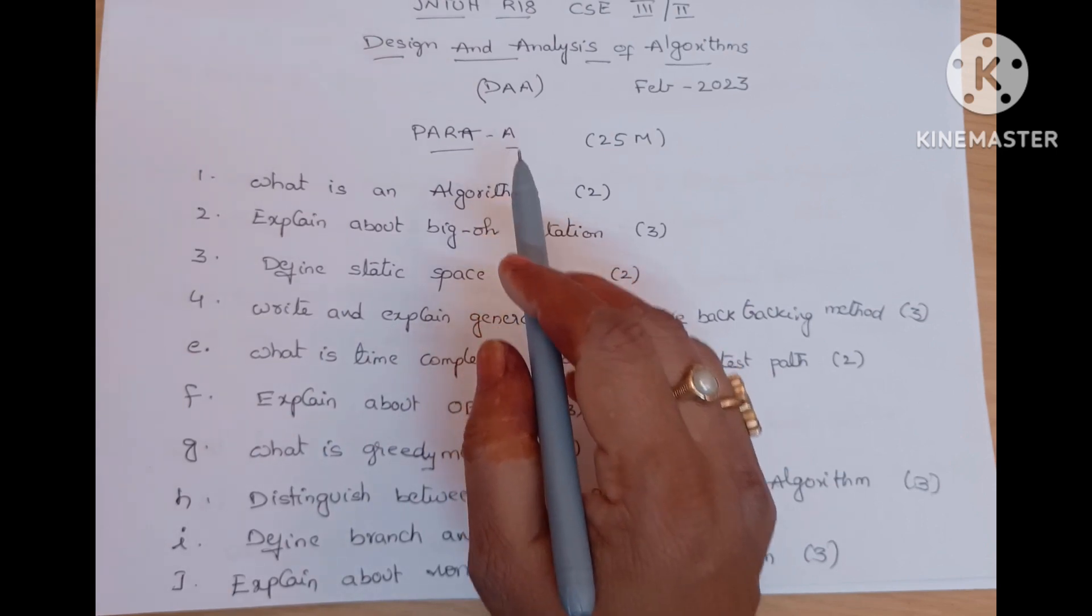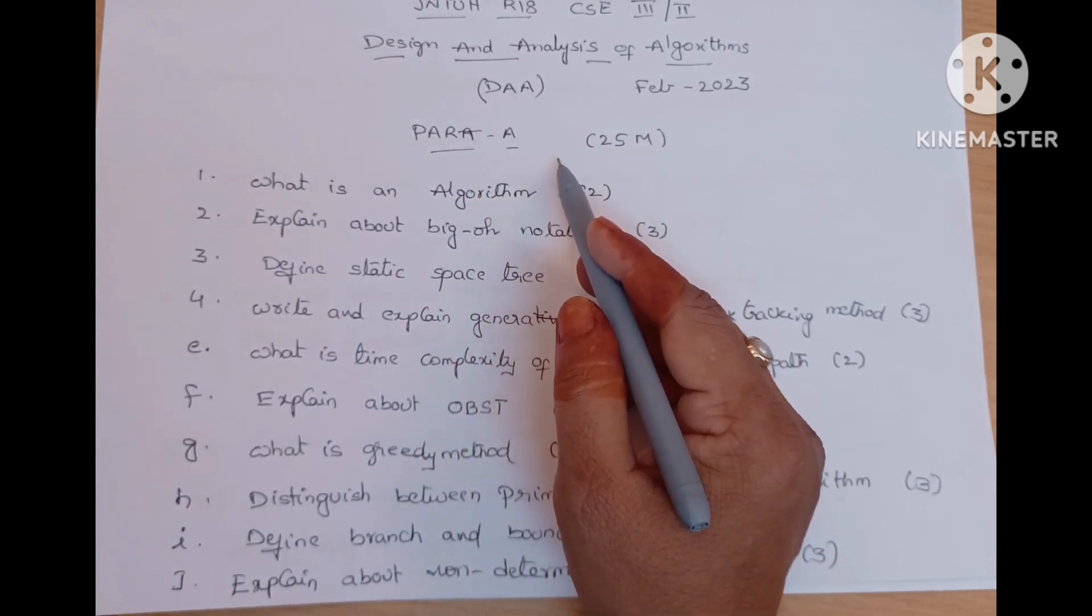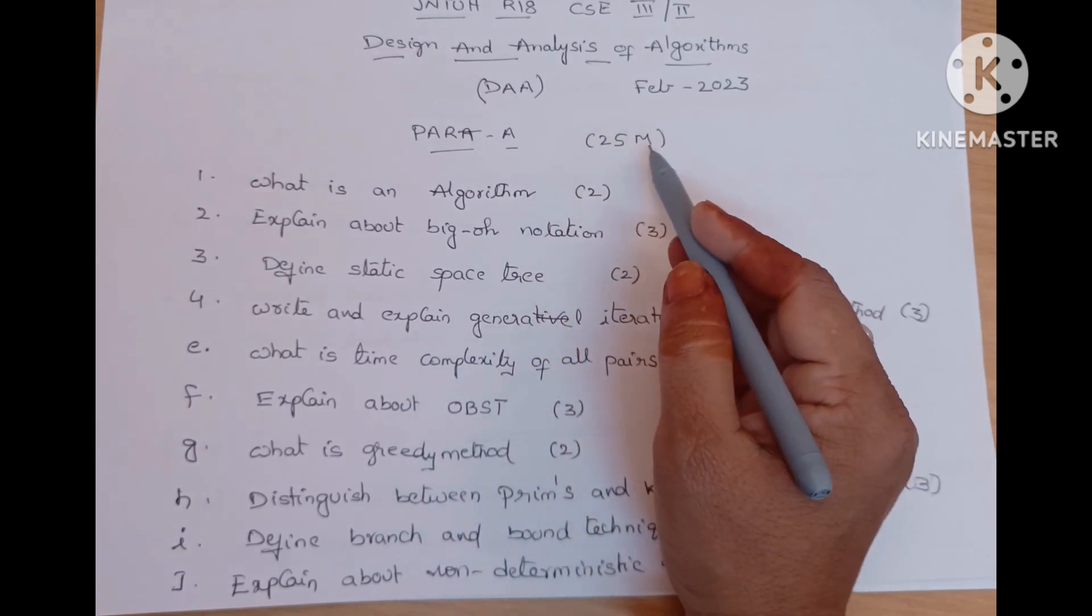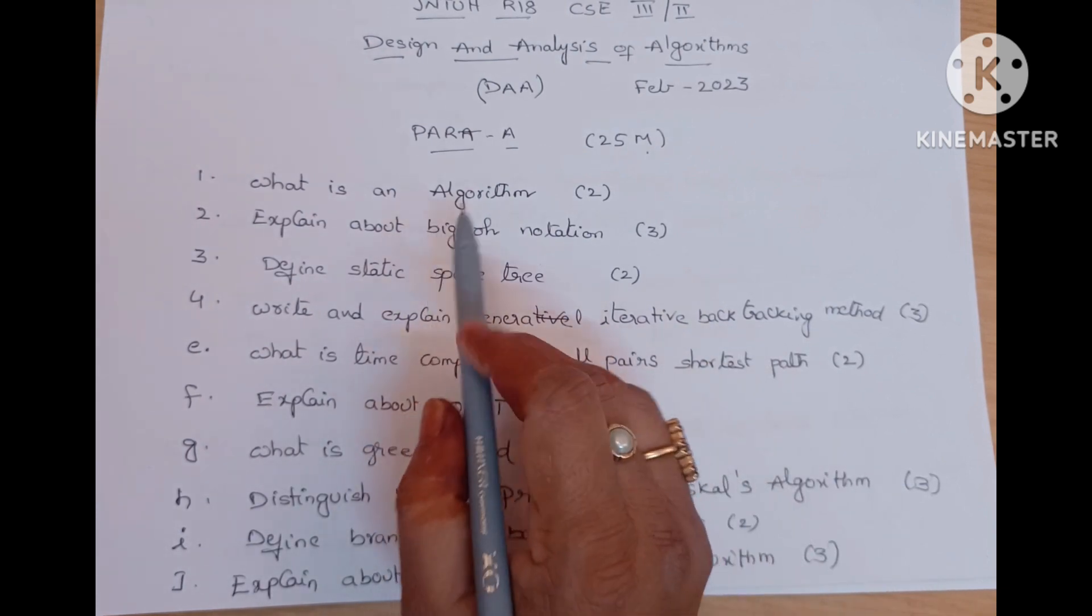First, the entire paper will be divided into two categories. One is Part A and second one is Part B. Part A consists of 25 marks all short answer questions. Part B is for 50 marks.